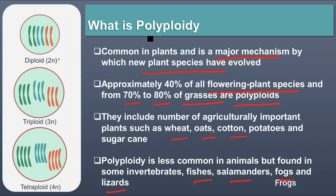In this diagram you can see diploid, and here is tetraploid. Tetraploid means 4 copies of the chromosome set are present.